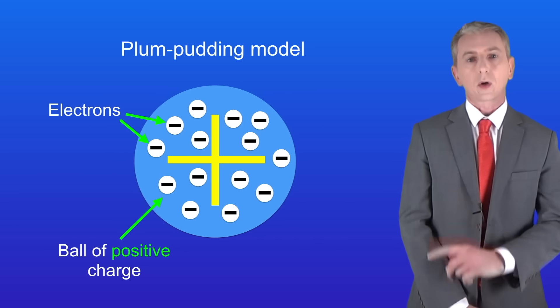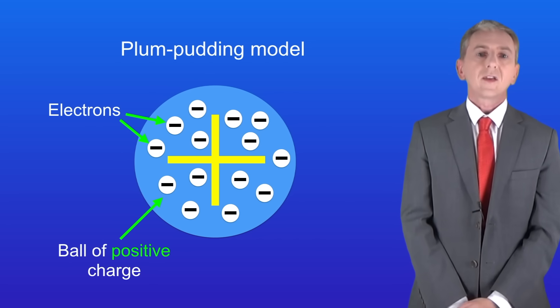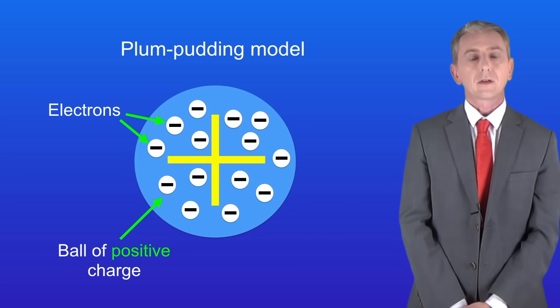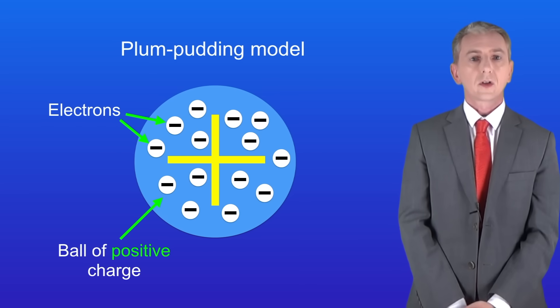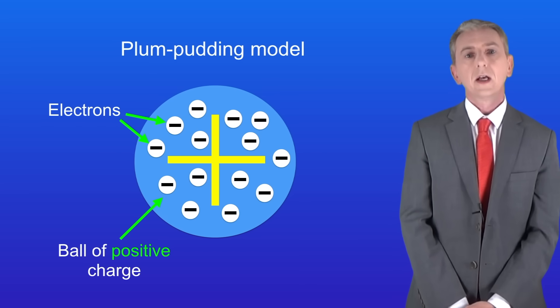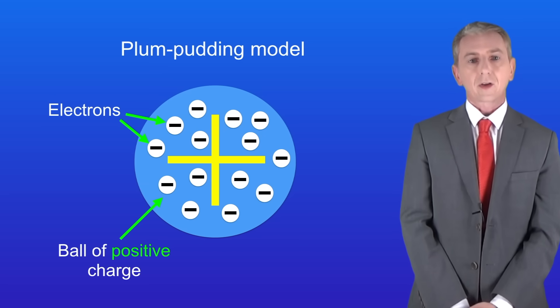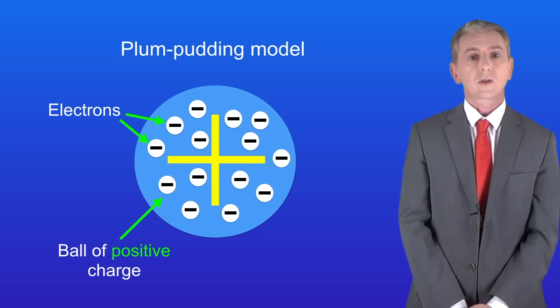I'm showing you the plum pudding model here. You can see a ball of positive charge with negative electrons embedded in it. Now scientists wanted to know if the plum pudding model was correct, so they carried out an experiment called the alpha scattering experiment, and you need to be able to describe it.